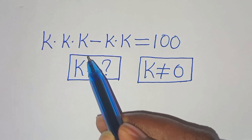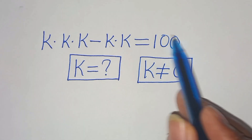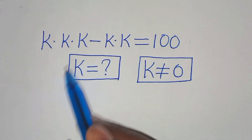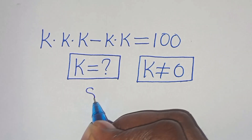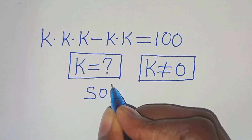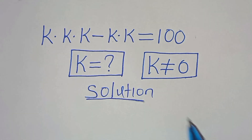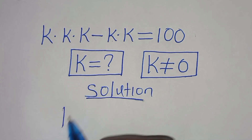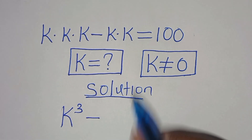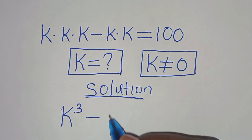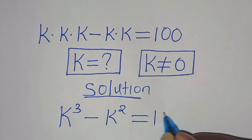We have k times k times k minus k times k, this is equal to 100. So what is the value of k, given that k is not equal to zero? Let's provide a solution. k times k times k is k to the power of 3, subtract k times k which is k to the power of 2, and this is equal to 100.